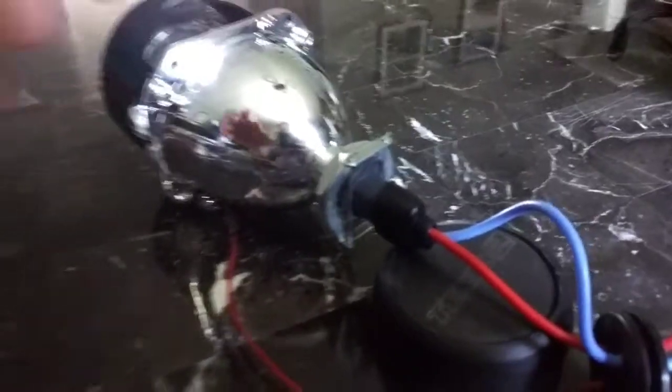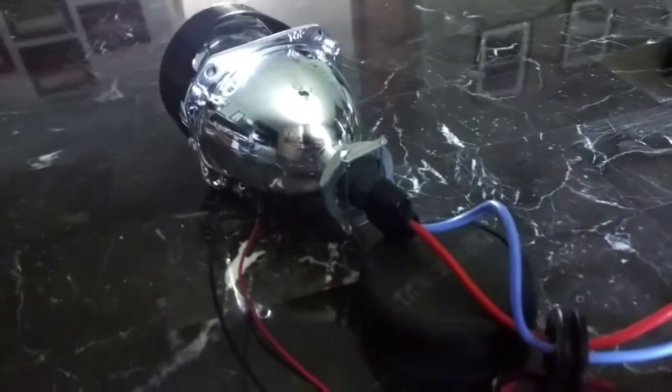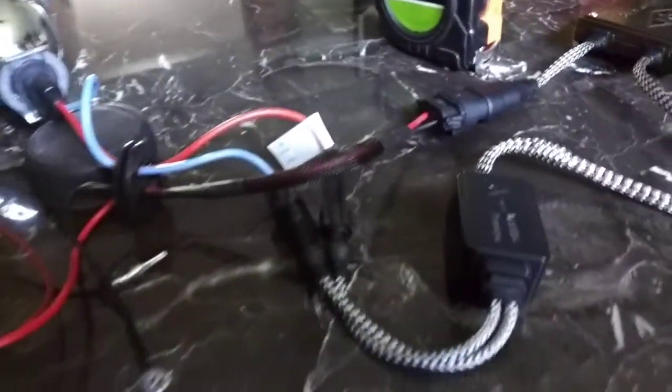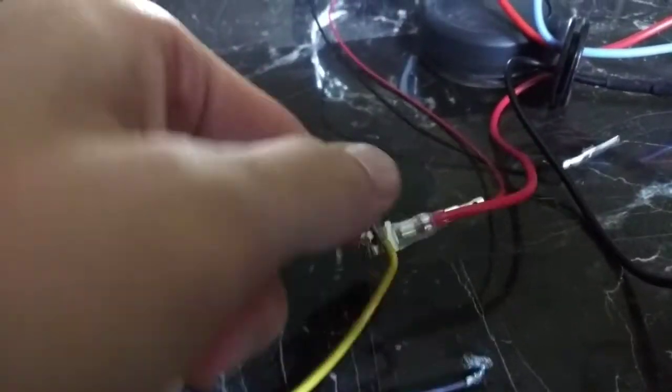So the bulb is installed in the back of the projector housing. It's held in place with this metal retaining clip. I have all the wiring connected to my super safe power supply. We'll go ahead and turn it on and see what it looks like.